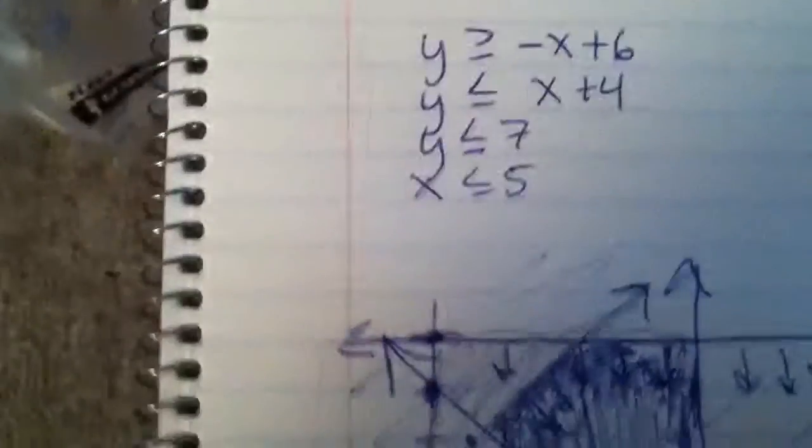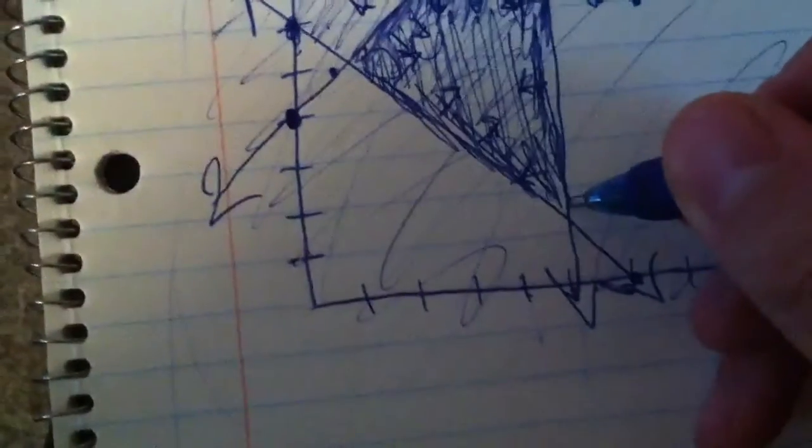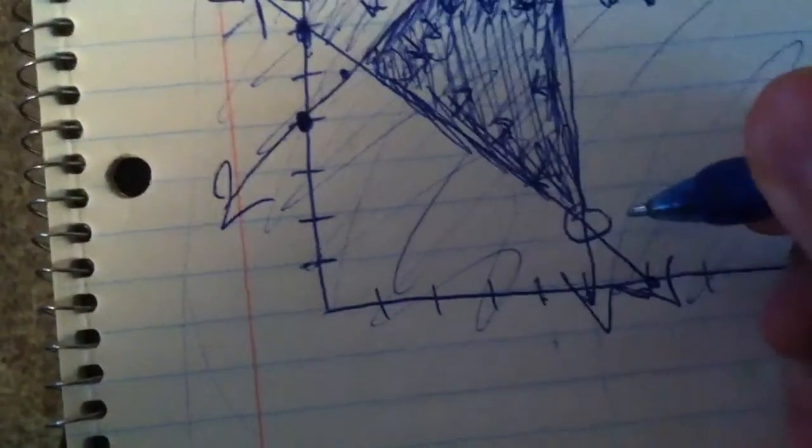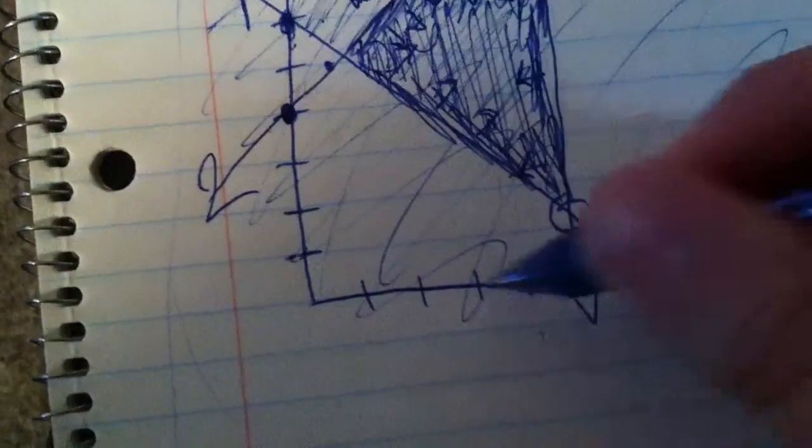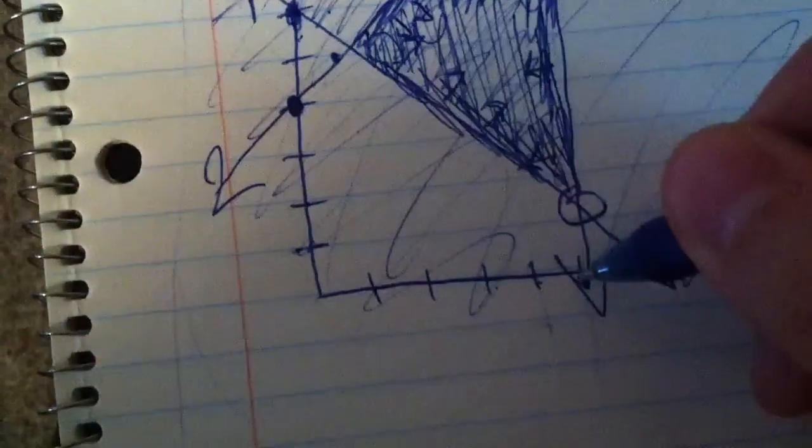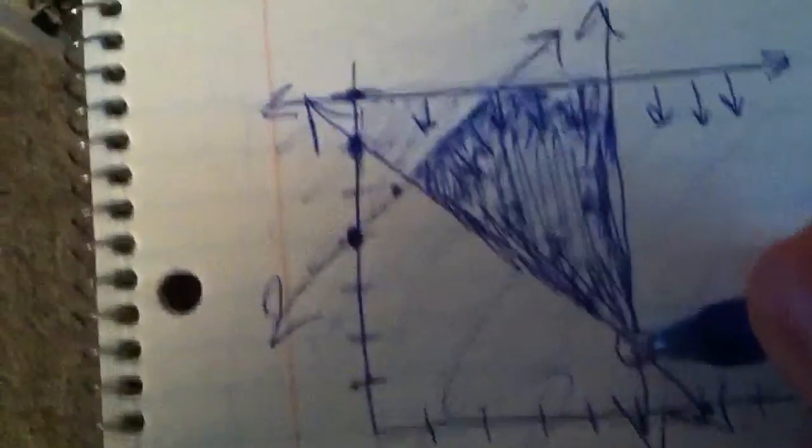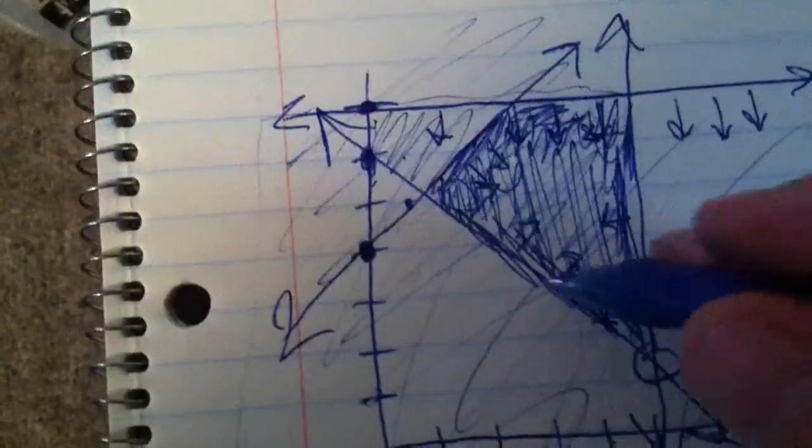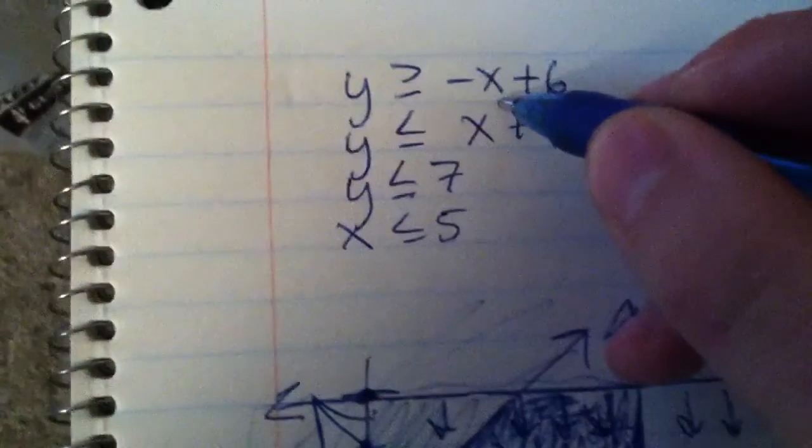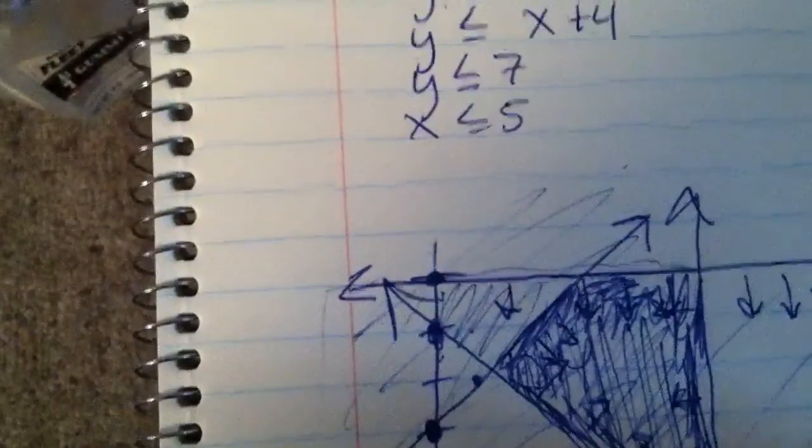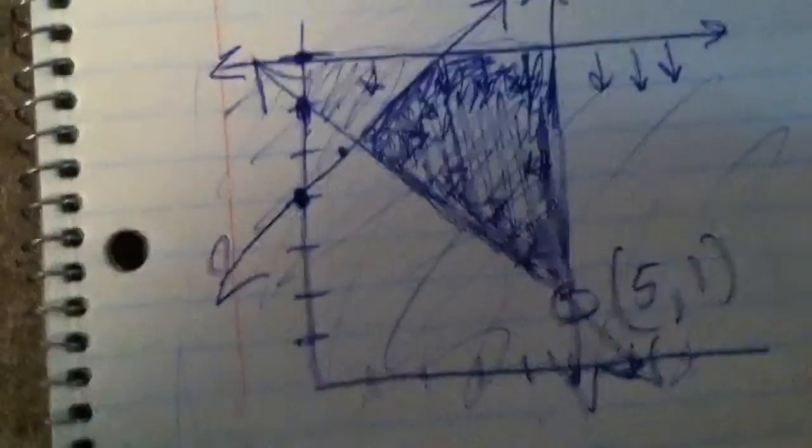As far as finding the vertices, you know, the corners, if your graph is decent, you can just kind of look. Like this one is 1, 2, 3, 4, 5. I think it's 5, 1. And then I can check that. That's the one going down. If I put 5 in here, I get negative 5 plus 6 is 1. 5 and 1 is this one, so that's 5, 1. So that's that one.